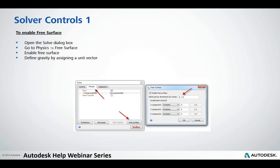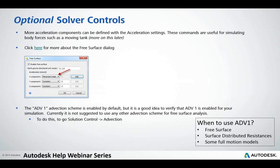Moving into solver controls — this is where we actually enable the free surface. Within solver, under physics for free surface, the only thing you need to do if your analysis is static is turn on gravity. Here gravity is acting in the negative Y direction, so we've got a value of minus one. If we might be moving our box — say a lorry containing fuel that's braking, a seismic event, or sloshing — we would add additional acceleration components. Advection Scheme 1 is selected by default and we should always leave that as default; it's the only advection scheme to use for free surface models. It's also critical for surface resistances and some full motion models.